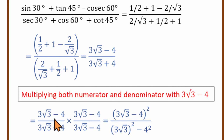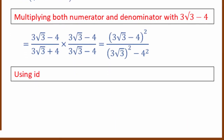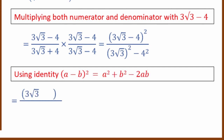In the numerator, we have the same terms. In the denominator, we apply the a plus b times a minus b formula, giving a squared minus b squared. Using the identity, we simplify. The final answer is correct.